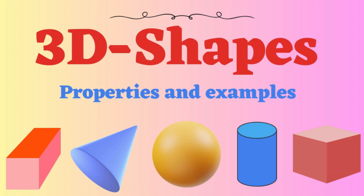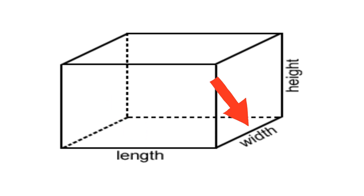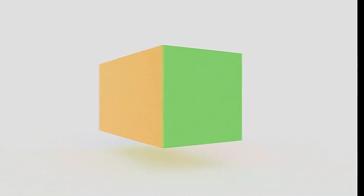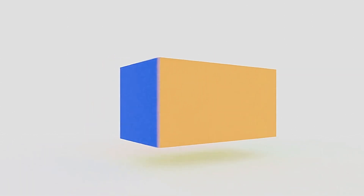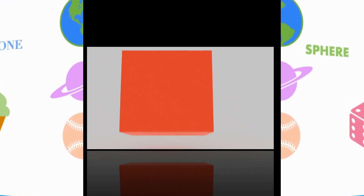Hello everyone, welcome to Super Kids Gurukul. In this video we are going to learn about 3D shapes and its properties. It is called 3D because it describes shapes and objects that have three dimensions: length, width, and height. Length tells us how long an object is, width tells us how wide an object is, and height tells us how tall an object is. We are going to explore different 3D shapes in this video.